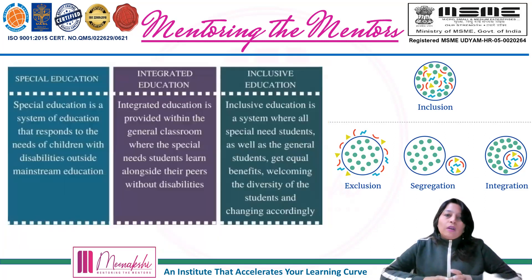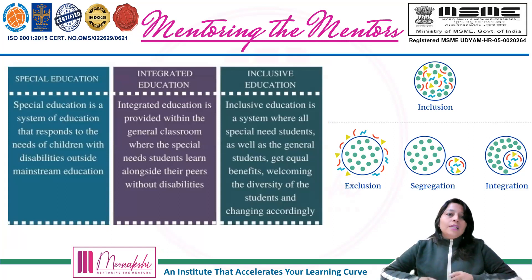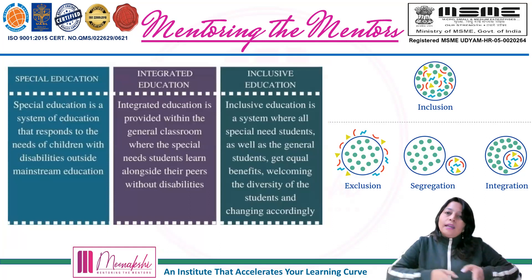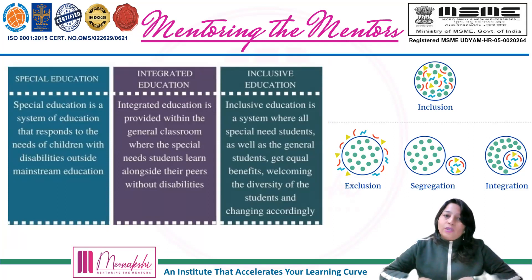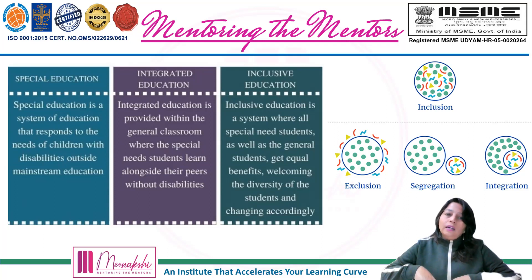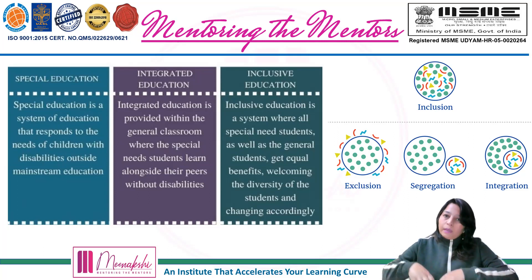So when we compare these three different kinds of education, we shall talk about them one by one. Special education is a system of education that responds to the needs of the children with disabilities outside the mainstream education — they are separate. And integrated education is provided within a general classroom, where special needs children learn alongside peers without disabilities. They are only in their own way, but they have special attention.